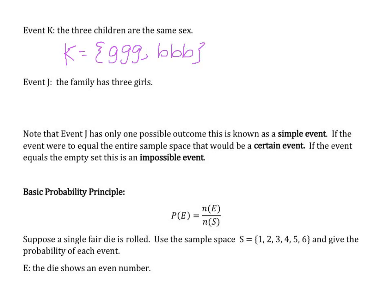Event J: the family has three girls. Well, the only option when I looked at that set, the only option for all girls was simply just girl, girl, girl.